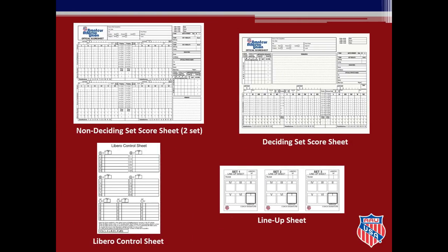On this slide you can see examples of different sheets that are used for AAU scoring. These include a two-set non-deciding score sheet, a deciding set score sheet, a Libero control sheet, and a lineup sheet.